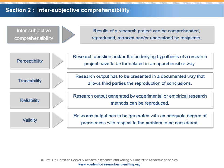Validity: the aspect of validity is closely linked to reliability. However, it addresses another problem. Validity means that the research output has to be generated with an adequate degree of preciseness with respect to the problem to be considered. An example: a student designs a market survey to analyze a given research problem. A questionnaire has been sent to 2,000 companies. The response rate is 0.1%, meaning that two companies answered the questionnaire. Obviously, the results of the empirical analysis should not be used to support a precise conclusion.